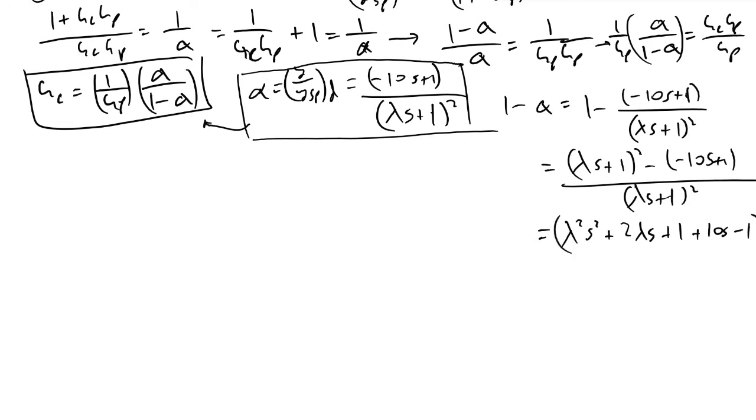If we continue to expand this equation, we'll have lambda squared s squared plus 2*lambda*s plus 1 plus 10s minus 1. These ones cancel. We will now write, so 1 minus alpha is equal to lambda squared s squared plus (2*lambda plus 10)*s divided by (lambda*s plus 1) squared.